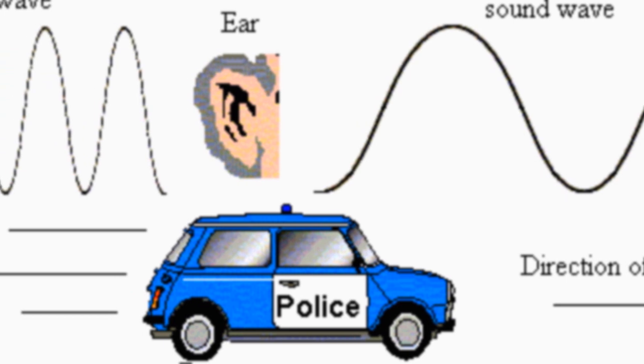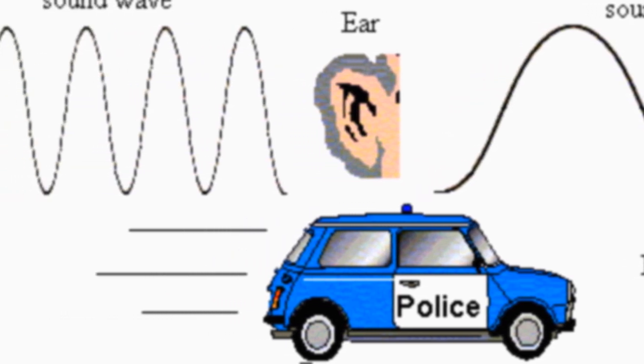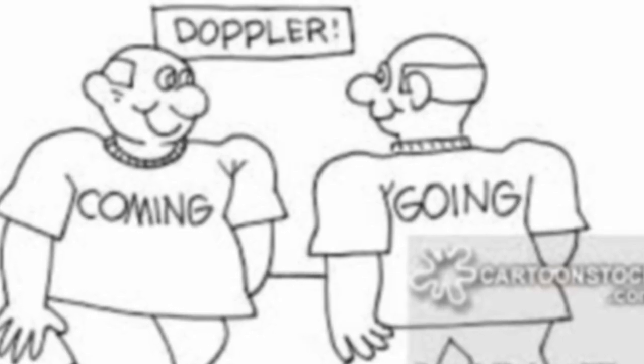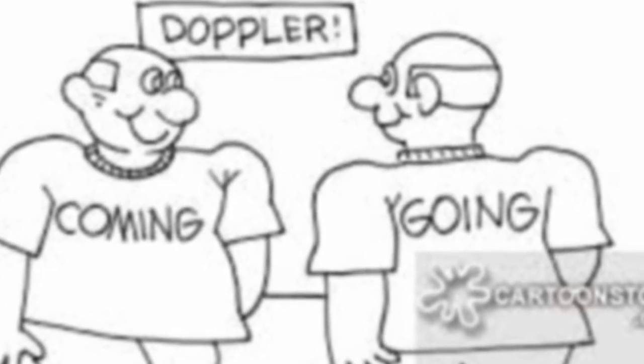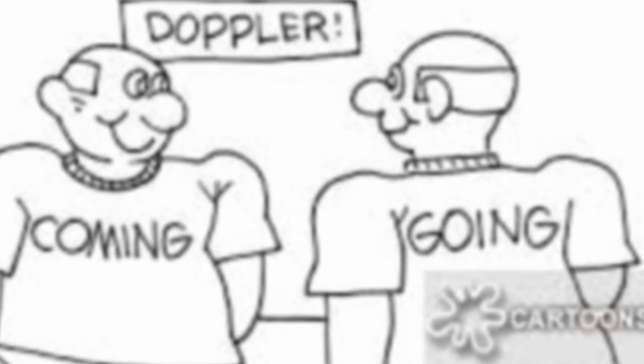This happens because, as the car is approaching, each sound wave is being emitted a bit closer to the wave before it, which results in the compressing of the waves. This results in a shorter wavelength and a higher tone. Once it passes by, each wave is emitted a bit further away, resulting in the wavelengths being stretched out, resulting in a lower tone.